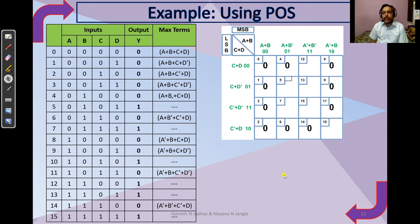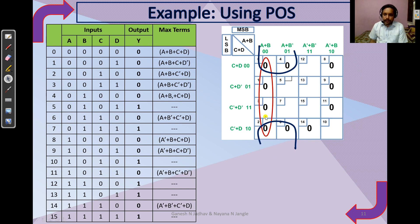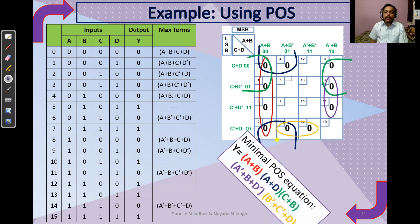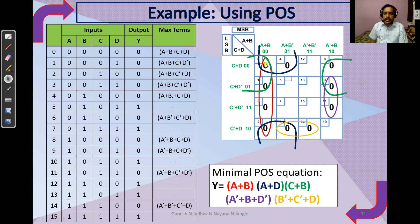Entering the zero values in the K-map: positions 0, 1, 2, 3, 4 are 0; position 6 is 0; positions 8, 9, 11 are 0; and position 14 is 0. Can we make a group of 16? No. Group of 8? Also not possible. Group of 4: yes — we can combine the first four (0,1,2,3) together, and another four together. Positions 6 and 14, and positions 8 and 9 must be handled as independent pairs.